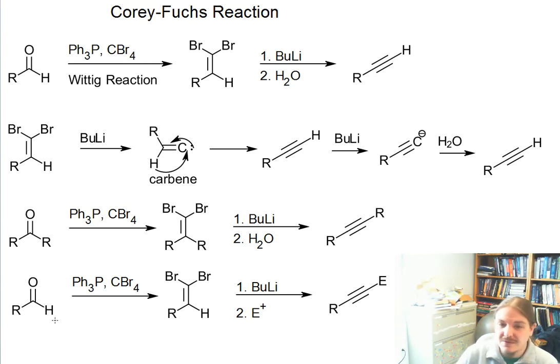A third modification, or another modification of the Corey-Fuchs reaction has, instead of using an aqueous workup where we're providing a proton to the acetylide, we can honestly add any electrophile here that we know will react with acetylide anions. So alkyl halides, other carbonyl compounds, etc.